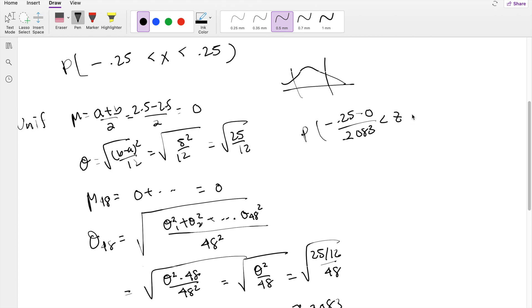This is the definition of Z, between 0.25 minus 0, over 0.2083. So you're basically asked to find a Z-score of negative 1.2 to positive 1.2.